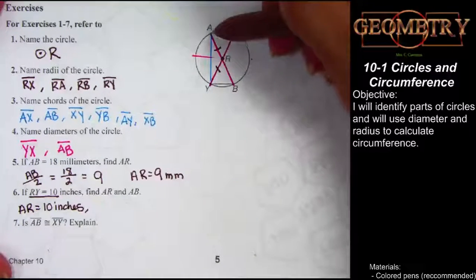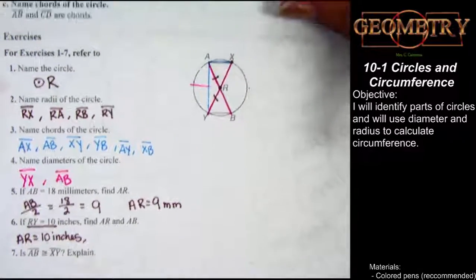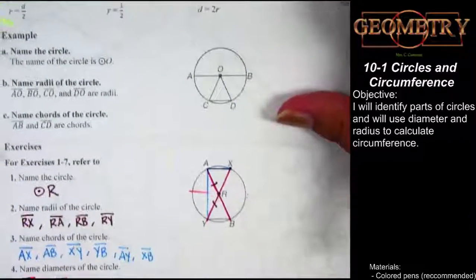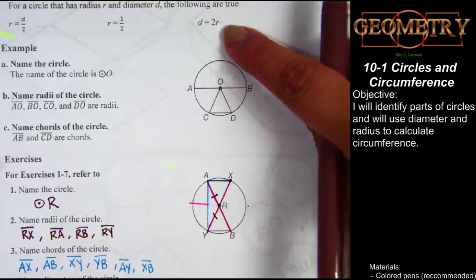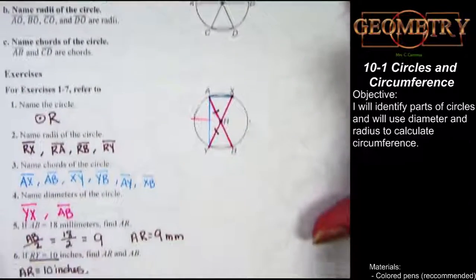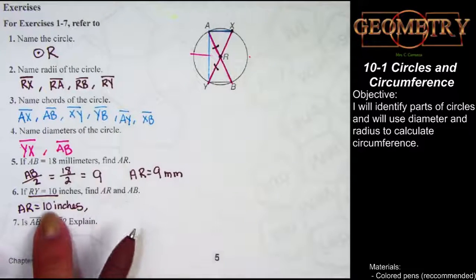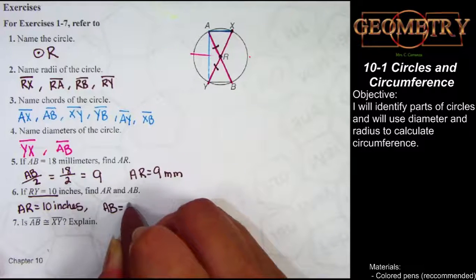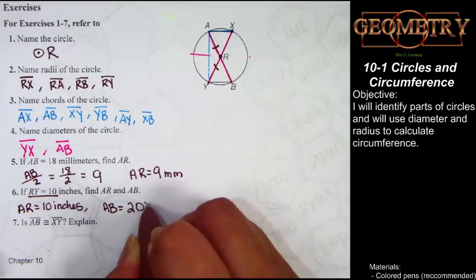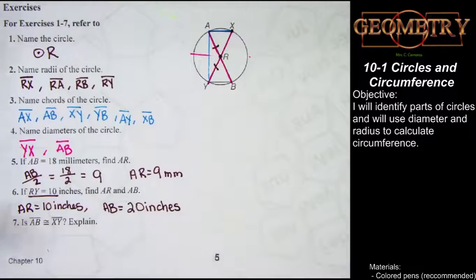Looking at AB, I notice that AB is a diameter. Referring back to the notes at the top, the diameter is two radii measures long. So if I take the measurement of one of my radii — which is 10 inches — and multiply by two, I get the length of my diameter. In this case, 10 times 2 is 20 inches.